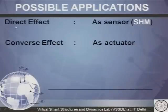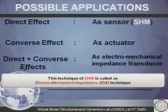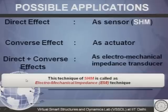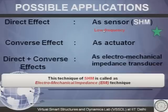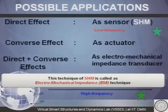Possible applications of piezo materials: in the direct effect, it can be used as a sensor for structural health monitoring (SHM). In the converse effect, piezo sensors can be used as actuators. When used in combined action — both direct and converse effects simultaneously — they are used as electromechanical impedance transducers, and this technique of SHM is called EMI (electromechanical impedance technique). In the direct effect, the frequency range is low — 5 Hz to 100 Hz — while the EMI technique is a high frequency technique in the range of 30 kHz to 400 kHz.